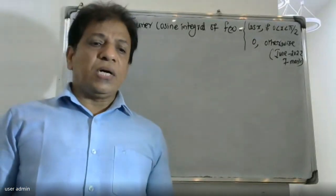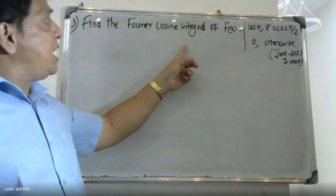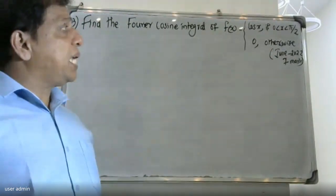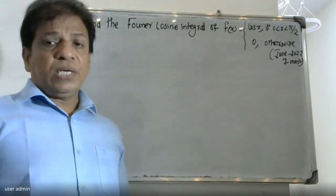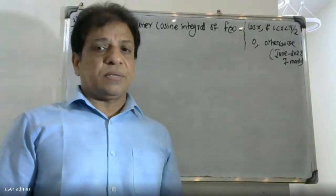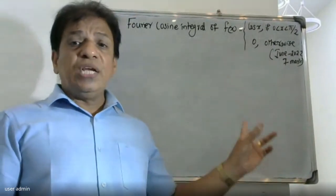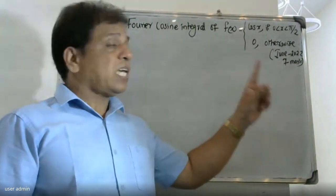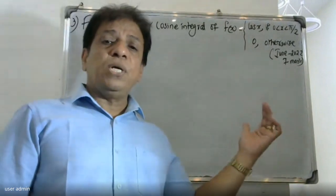Good morning friends. The university question: find the Fourier cosine integral of f(x) = cos(x) for 0 < x < π/2, and 0 otherwise. For all other cases, the function value will be 0.